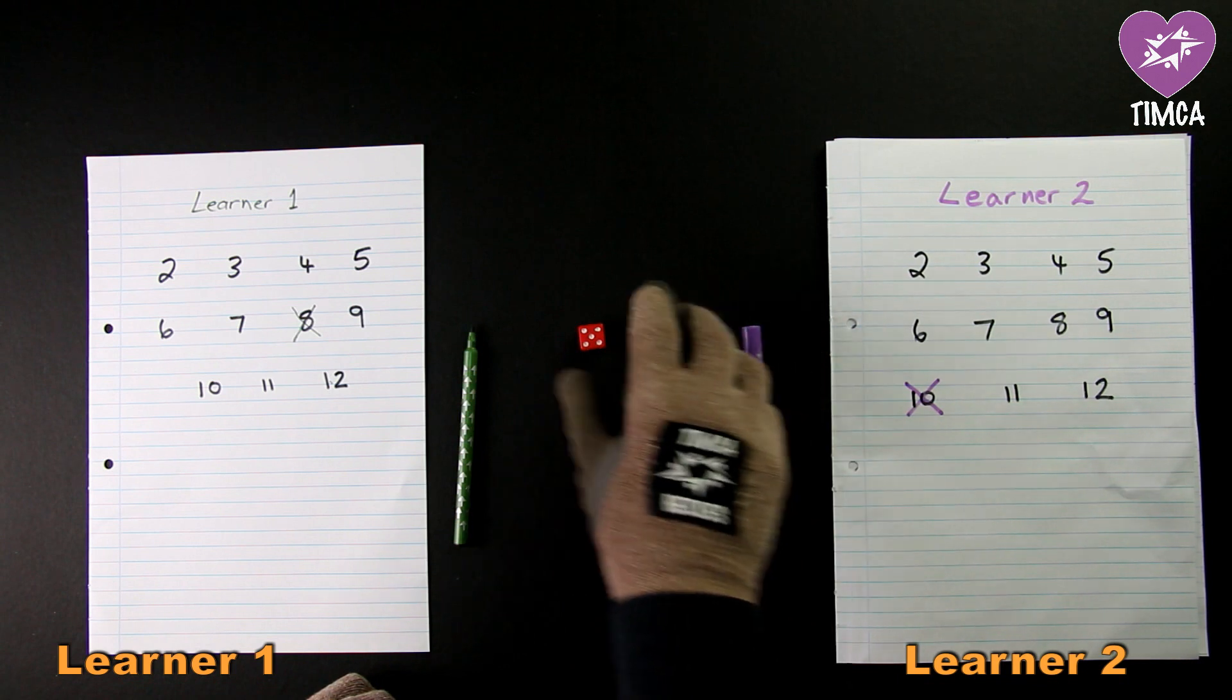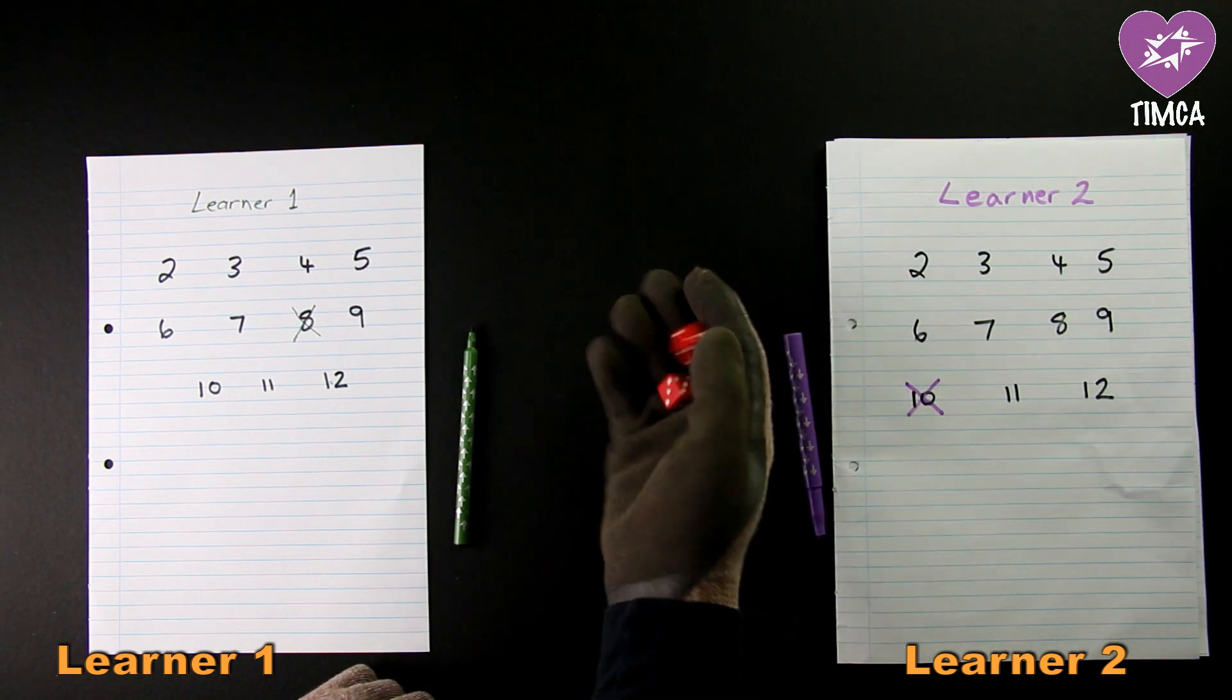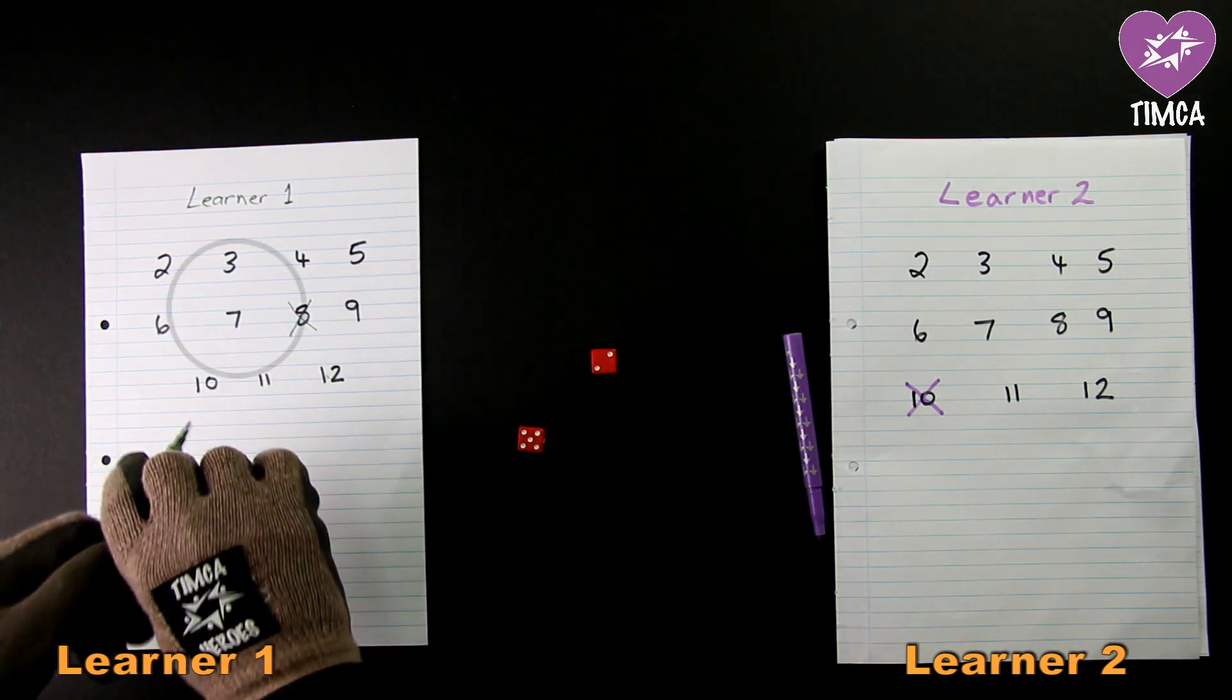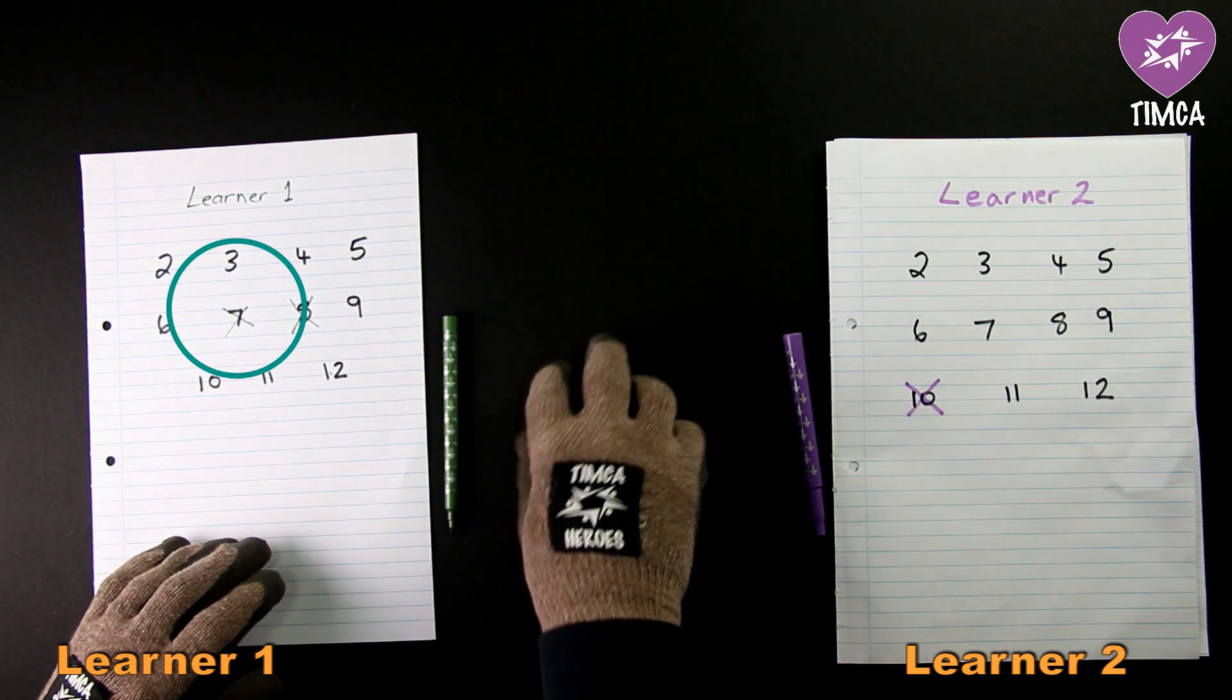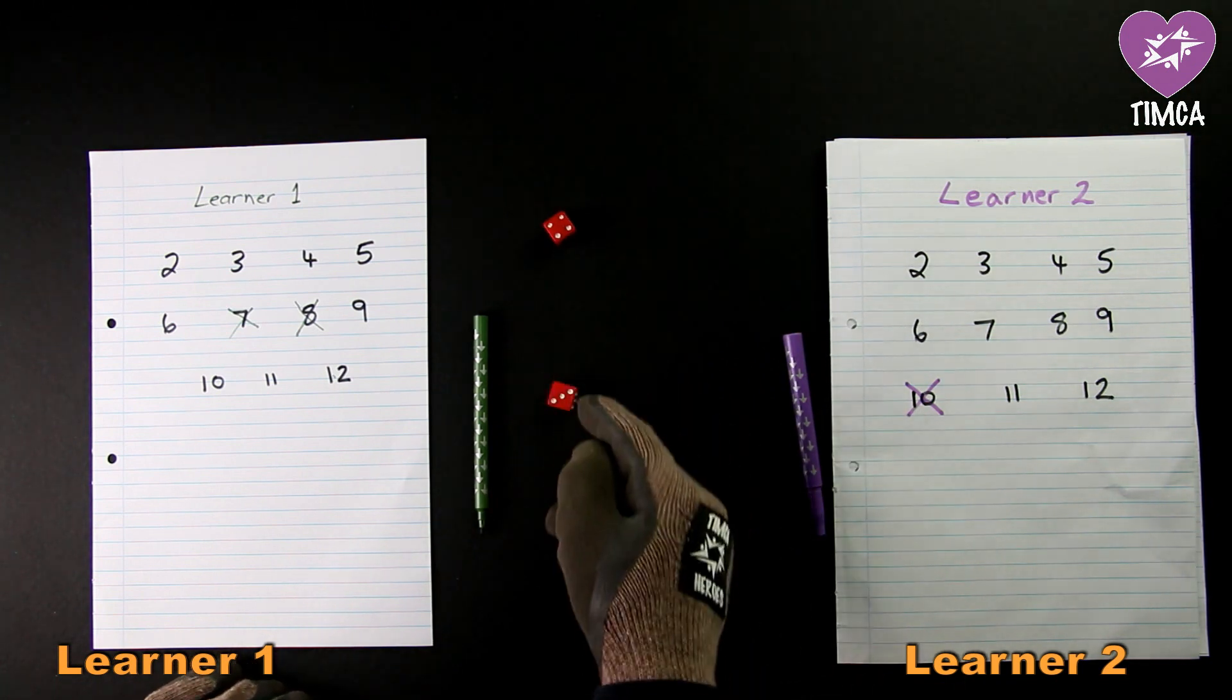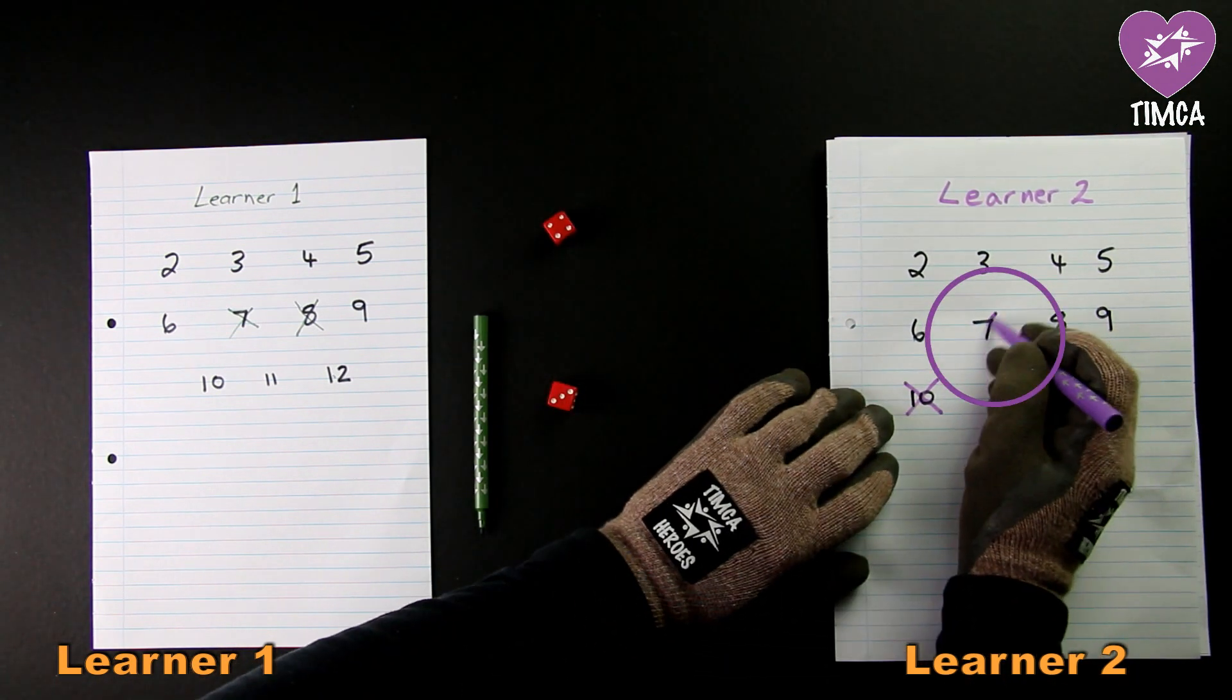Now we shall see two more examples of learner one throwing and learner two throwing. Learner one gets a five and a two which is seven and will now cross out the seven on their sheet. And then learner two will throw again and learner two gets a four and a three which is also seven and now crosses out that seven.